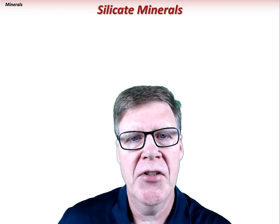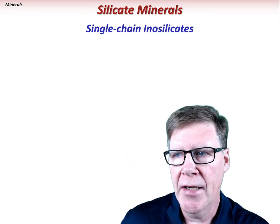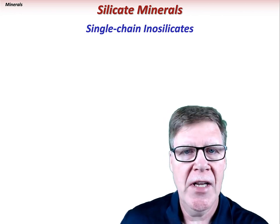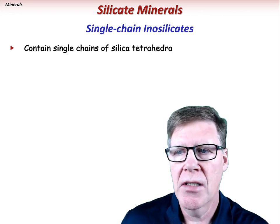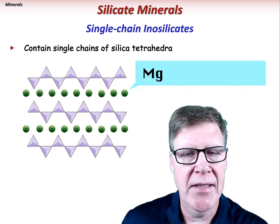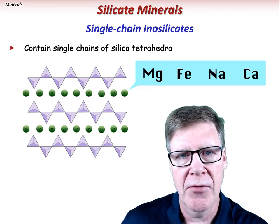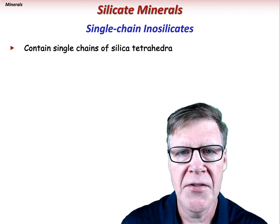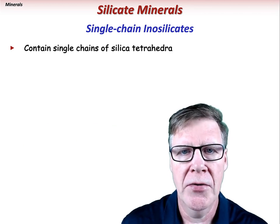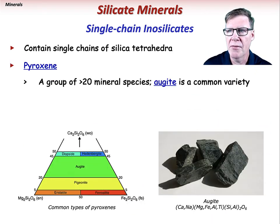Inosilicates are the chain silicates. Single-chained inosilicates have chains of linked silica tetrahedra with interspersed cations like magnesium, iron, sodium, and calcium. The single-chained inosilicates include the pyroxene group, which is a collection of more than 20 mineral species that are slightly different in composition.